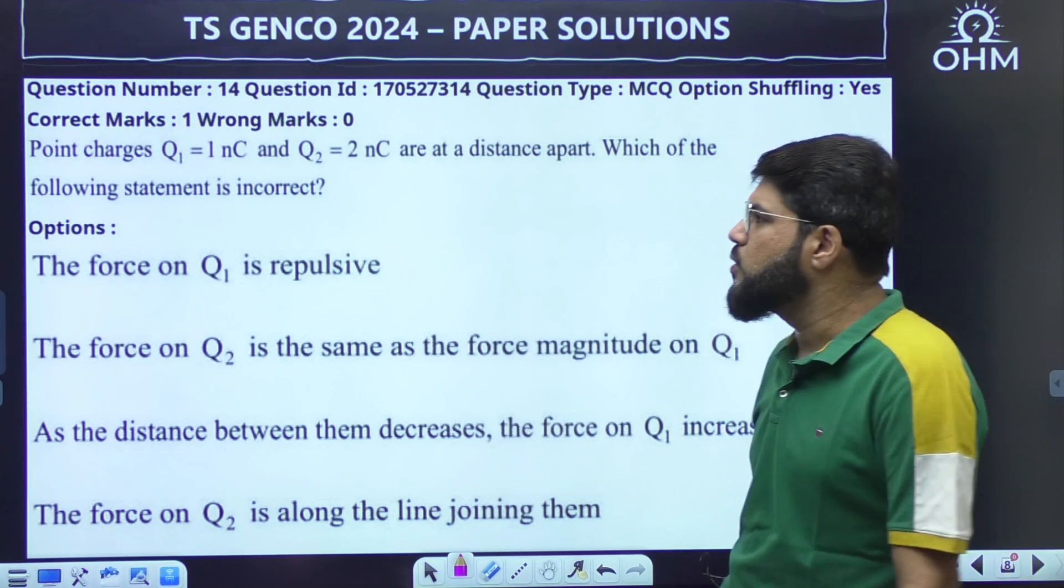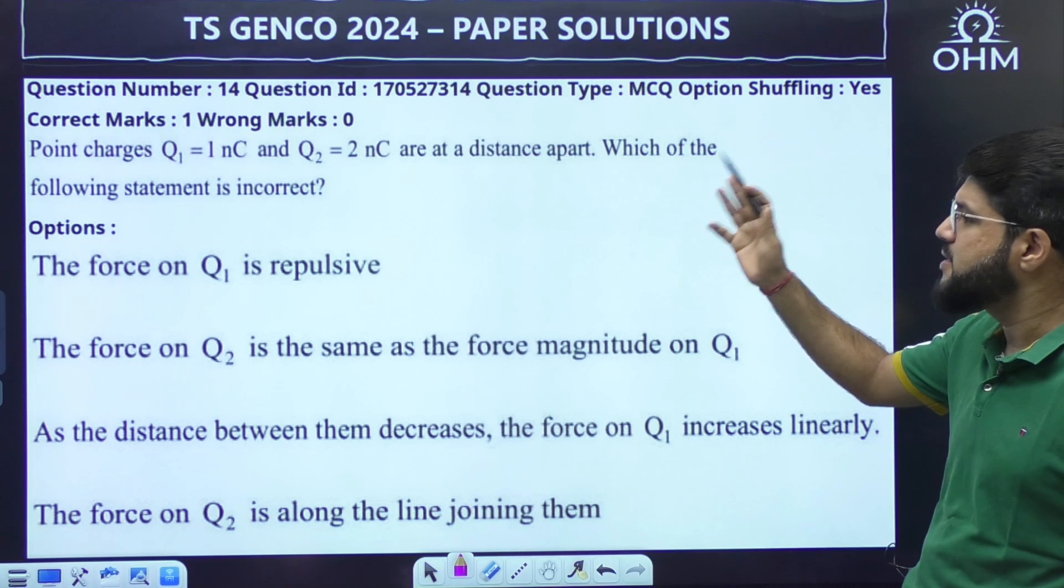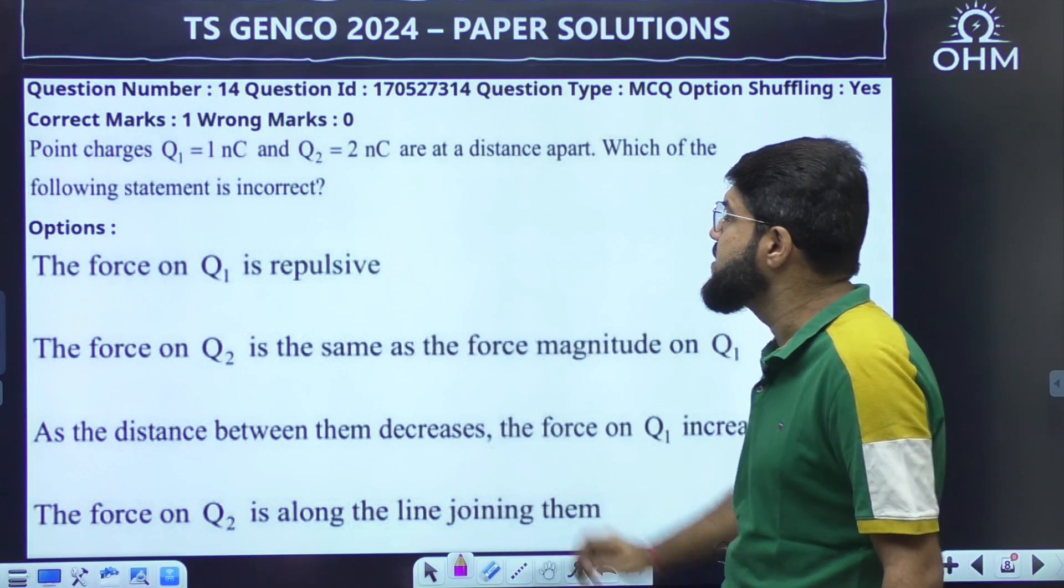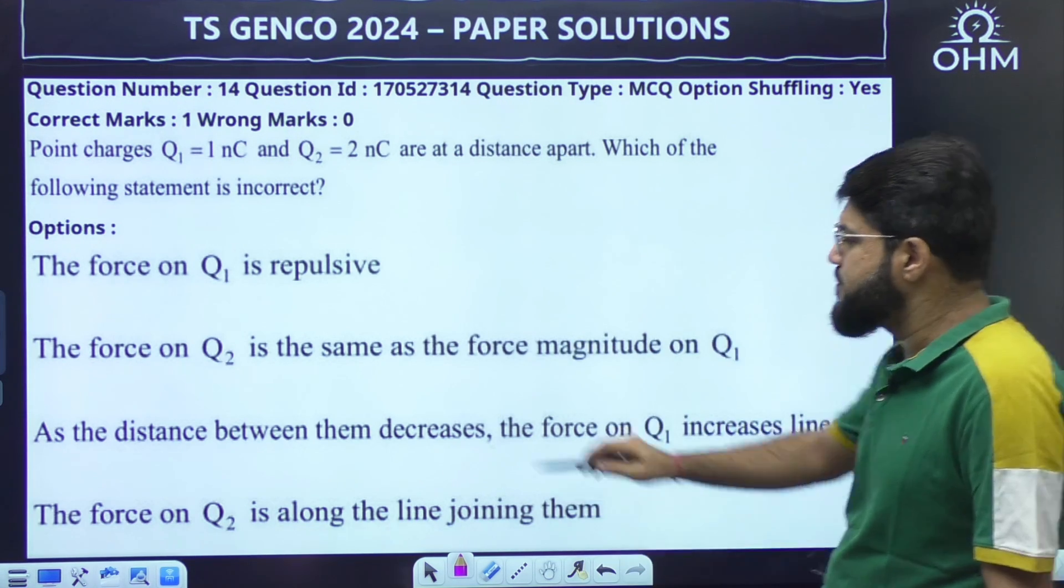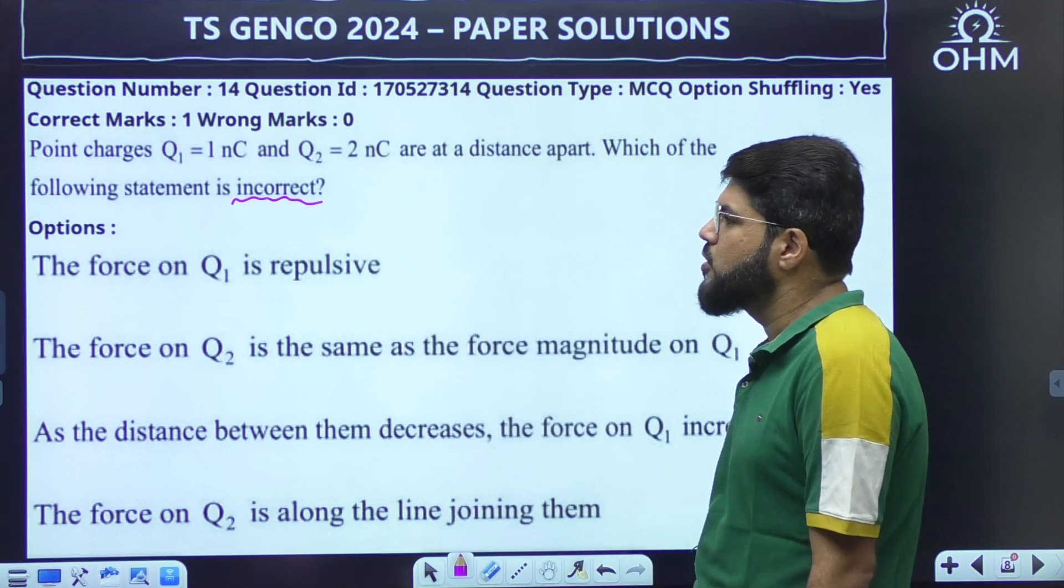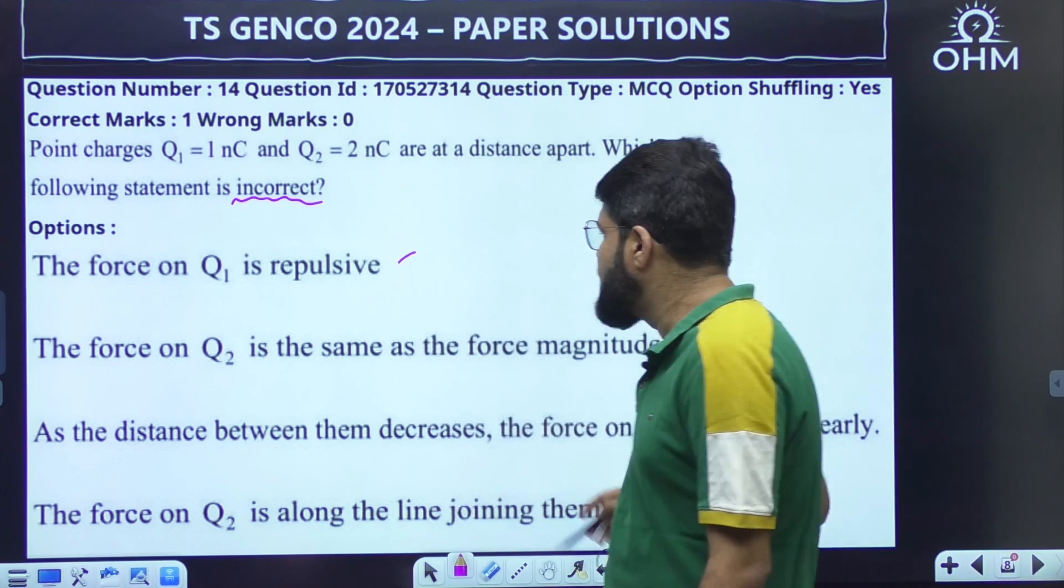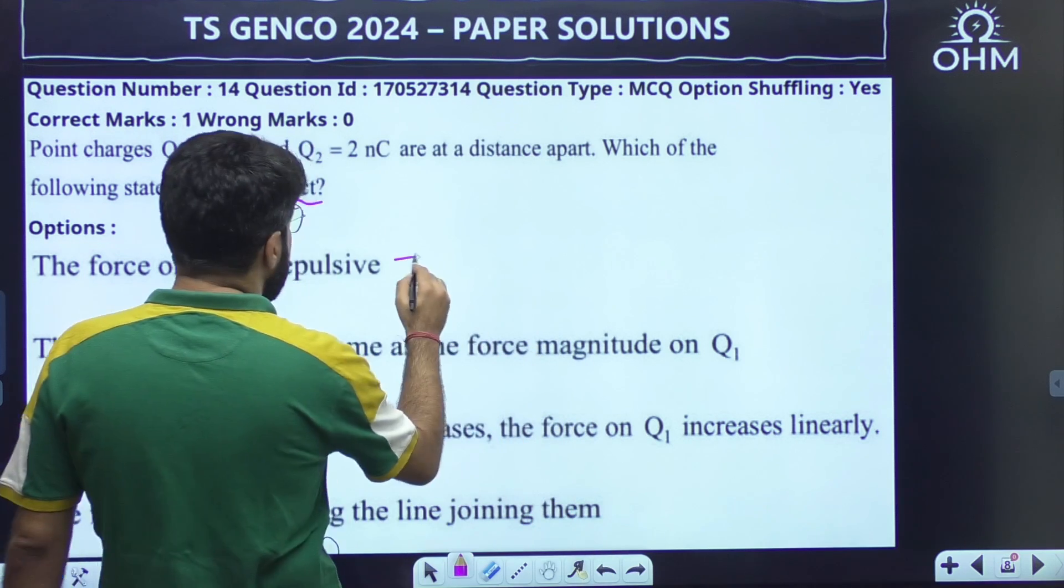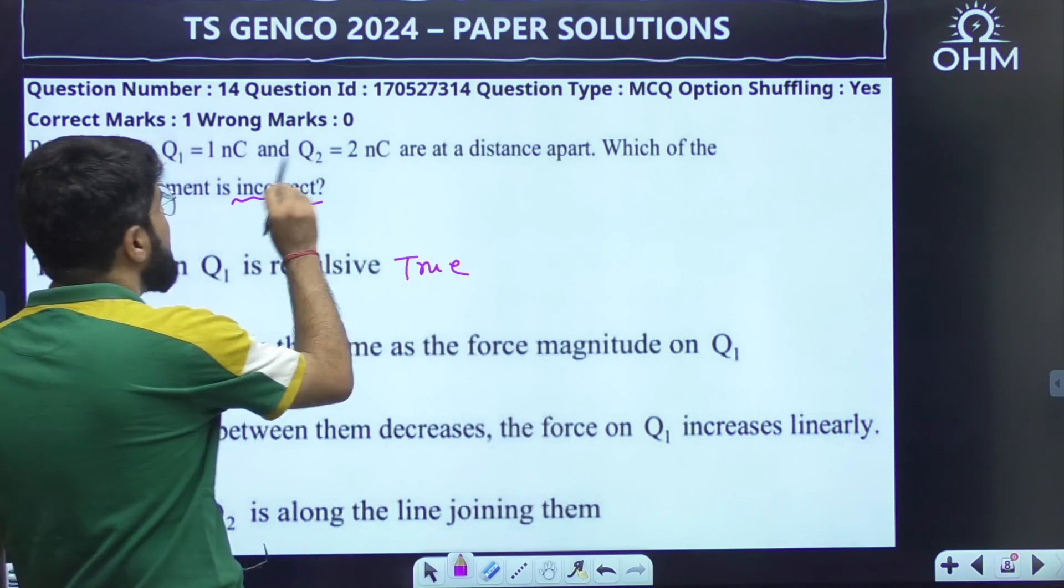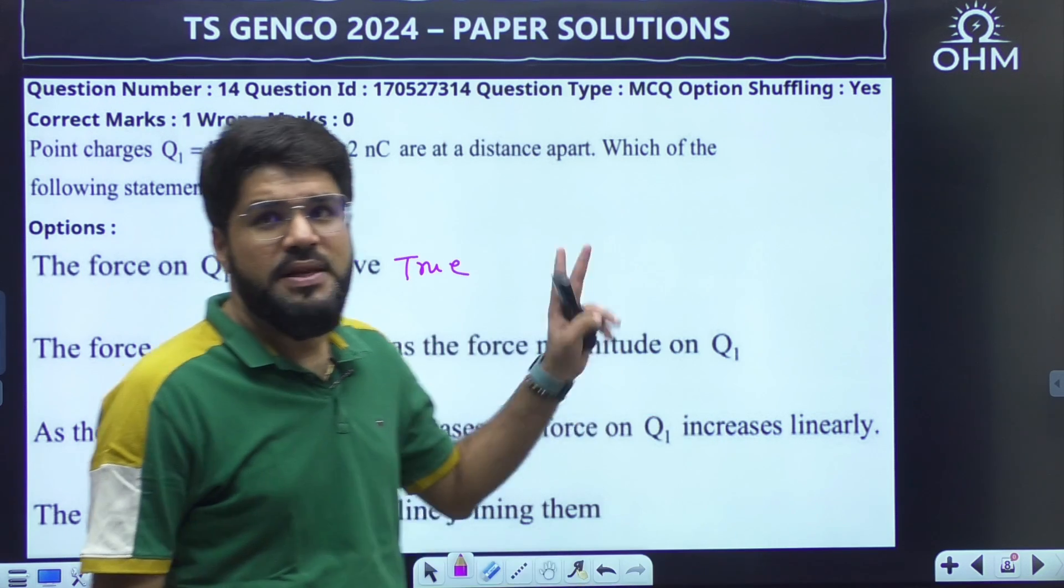Point charges Q1, 1 nano Coulomb, Q2, 2 nano Coulomb are at a distance apart. Which of the following statement is incorrect? The force on Q1 is repulsive. Yes, it should be repulsive. This is true. We have to identify the false one. This is true because the charges are like charges, same, plus plus. Like charges repel each other.